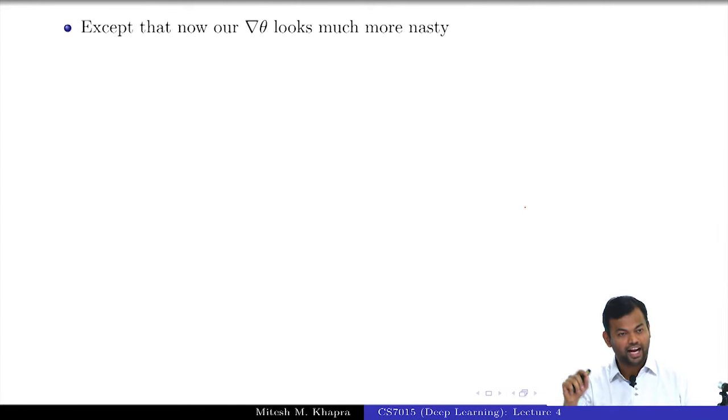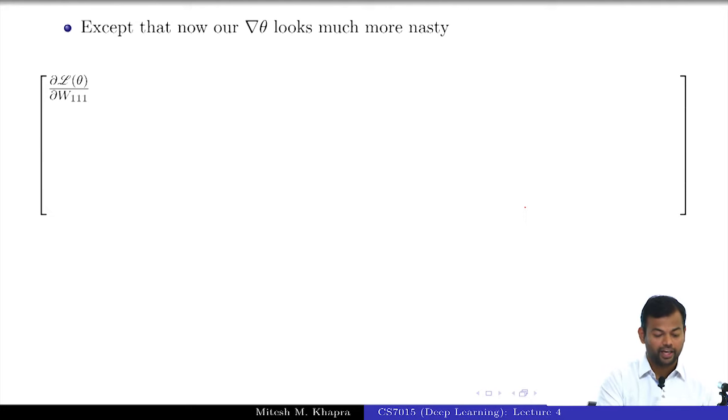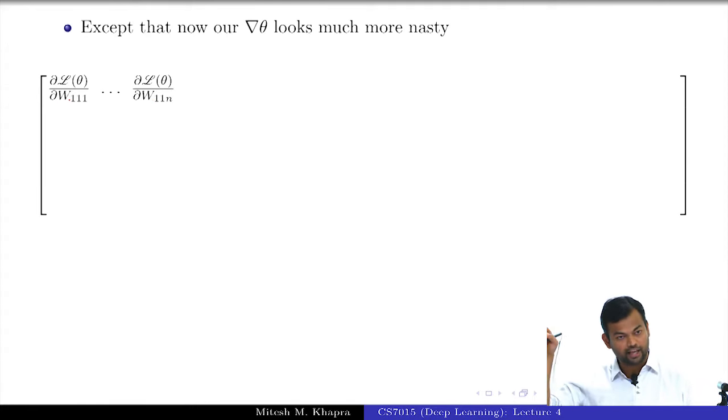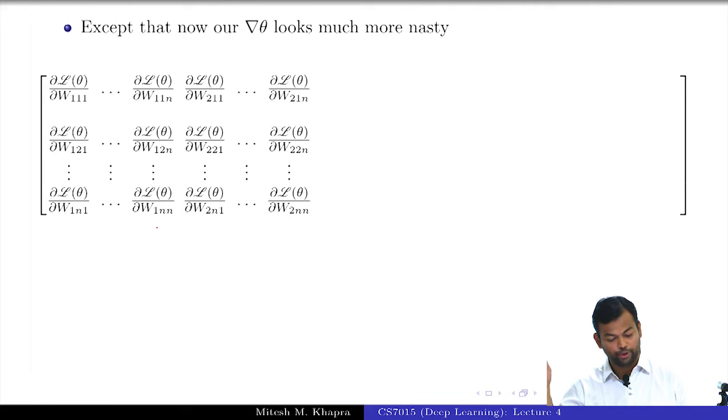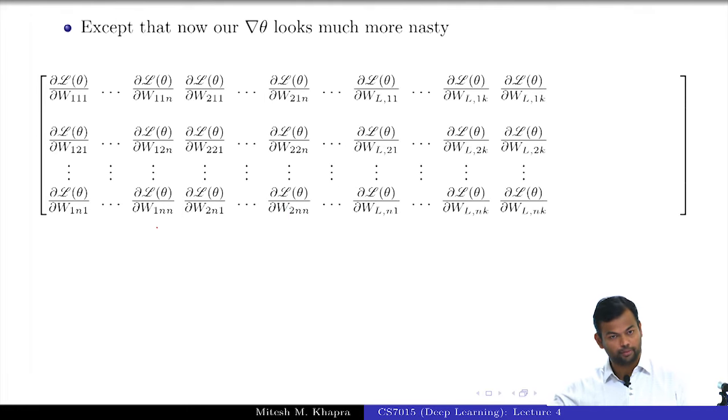This is the grad with respect to theta—it looks very nasty now. You have this weight matrix W_1, you have the derivative with respect to the first element of W_1 all the way up to the last element. With respect to all the n×n elements of W_1, what is the next entry going to be? W_{2,1,1} to W_{2,n,n}, next up to W_{L,1,1}.